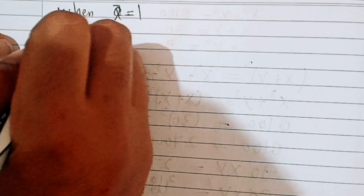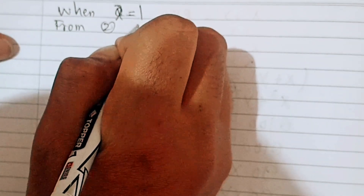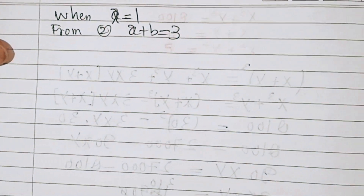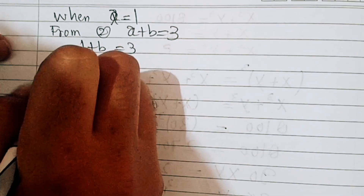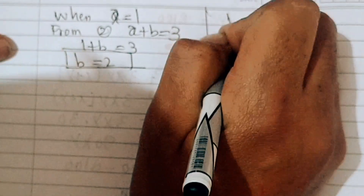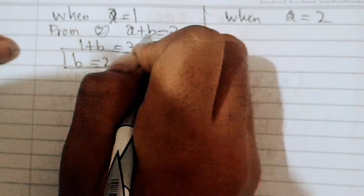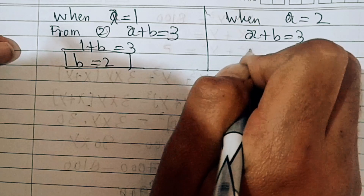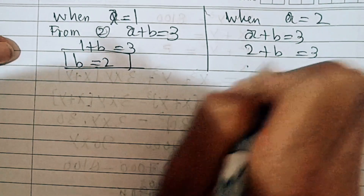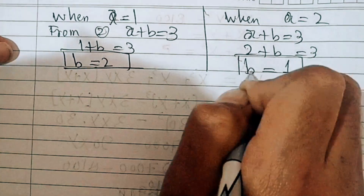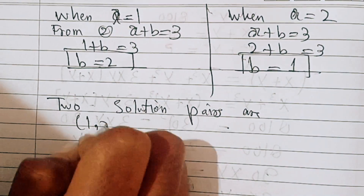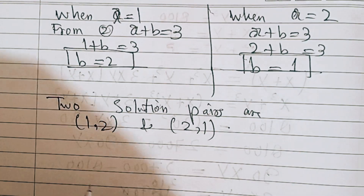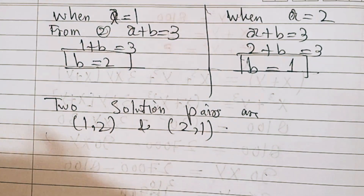So when a equals 1, we know from equation 2 that a plus b equals 3, so b equals 2. And when a equals 2, then 2 plus b equals 3, which means b equals 1. So the two solution pairs are (1, 2) and (2, 1). These are the two solutions of the given problem. Thanks for watching.